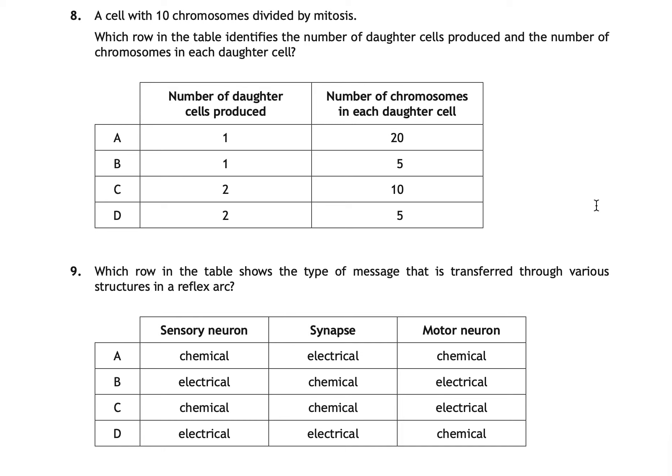Question eight is a mitosis question. A cell with 10 chromosomes divides by mitosis — how many daughter cells are produced and how many chromosomes does each contain? The correct answer is C: two daughter cells, each with 10 chromosomes. Mitosis produces two genetically identical daughter cells, so the chromosome number is not split — each daughter cell retains all 10 chromosomes.